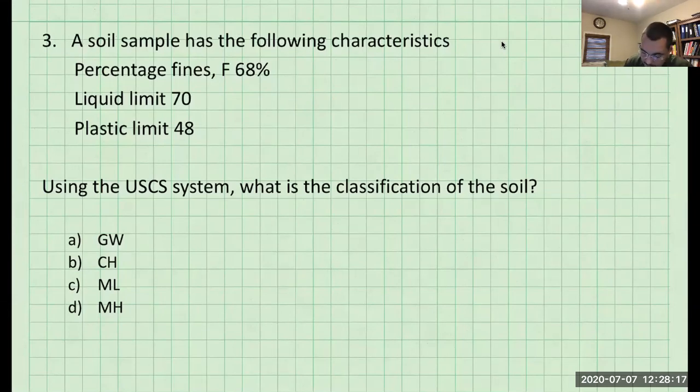We have here a sample that has the following characteristics. Basically they've done a sieve analysis curve and they've done some Atterberg limits. We have a percent fines of 68%, a liquid limit of 70%, and a plastic limit of 48%. What is the classification of the soil using the Unified Soil Classification System?